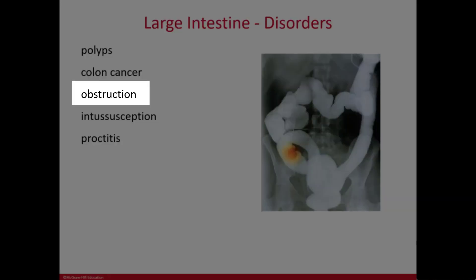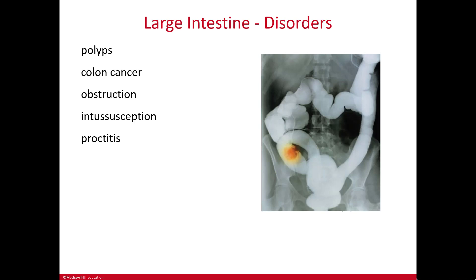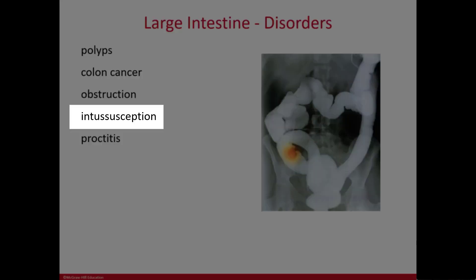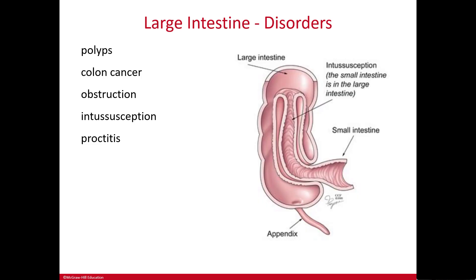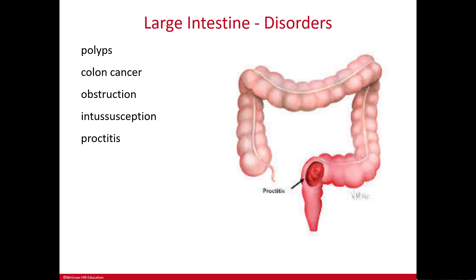Obstruction of the large bowel can be caused by tumors, large polyps, or diverticulitis. It occurs less often than in the small intestine because of the larger diameter, but it still can happen. Intussusception, covered in the last video, is when part of the large intestine telescopes into another part, treated with a barium enema. Proctitis is inflammation of the lining of the rectum — procto means rectum — and can occur with ulcerative colitis, Crohn's disease, or radiation therapy, causing rectal pain, rectal bleeding, or excessive mucus in the stool.